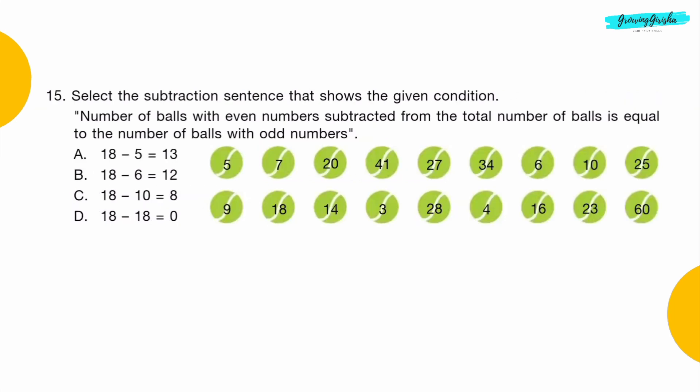Question 15: Select the subtraction sentence that shows the given condition. Number of balls with even numbers subtracted from the total number of balls is equal to the number of balls with odd numbers. Option C: 18 minus 10 is equal to 8.